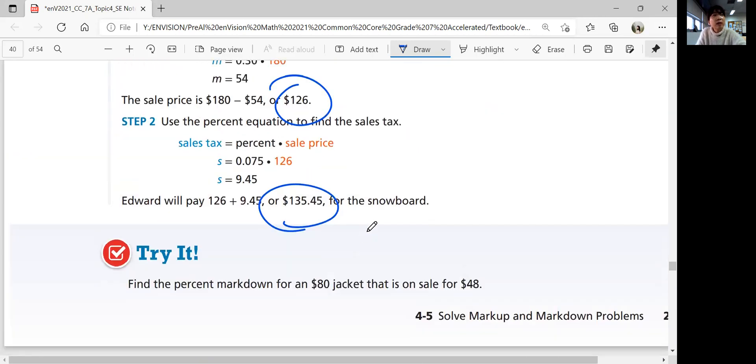Let's look at a try question. Find the percent markdown for an $80 jacket that is on sale for $48. There's no tax you need to worry about, just find the markdown price, the sale price. First, you need to figure out the markdown price by subtracting 80 minus 48. That's your markdown price. You need to figure out how much percent it is marked down from $80. $80 minus 48 is $32.